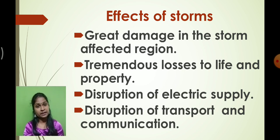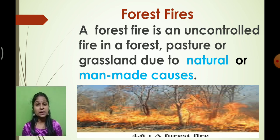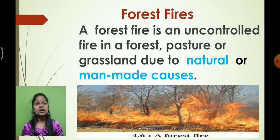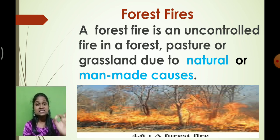Not only storm and flood, but forest fire is also one of the biggest disasters that can occur anytime, anywhere. Forest fires are uncontrolled fires in a forest or grassland that spread at a rapid rate and cannot be controlled once they start. Forest fire can be natural or man-made — both types can cause serious damage to the environment.